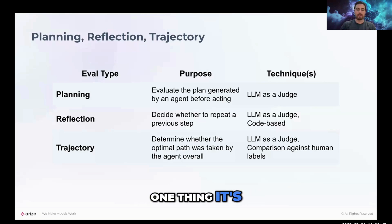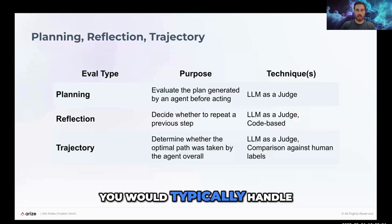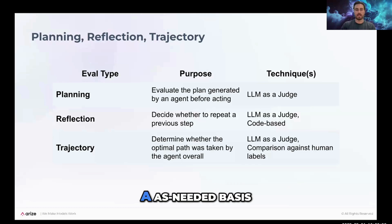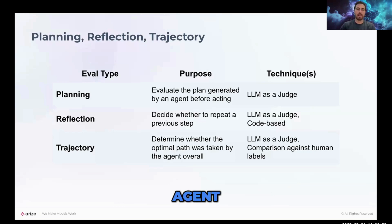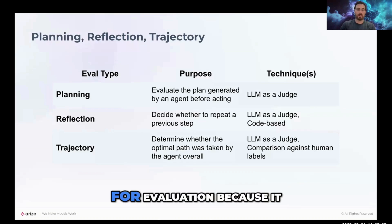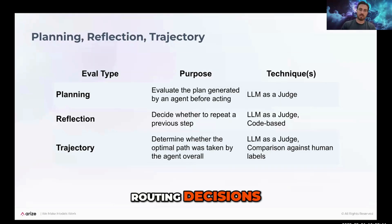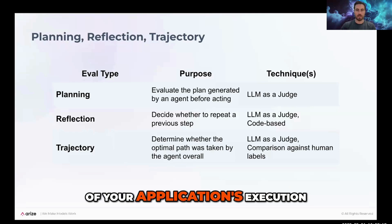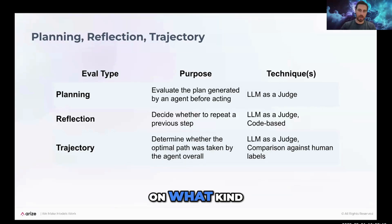One thing planning does is take a lot of the routing decisions that you would typically handle on an as-needed basis with distributed routing logic in your app and pull them all to the beginning of your agent. You're saying: we're going to plan out everything before we execute. That can be very helpful for evaluation because instead of looking at individual routing decisions, you're looking at an overall plan generated at the beginning of your application's execution.